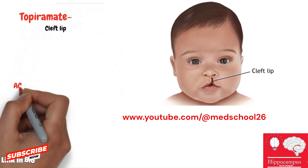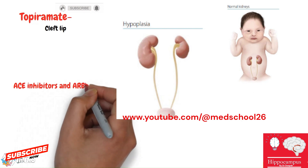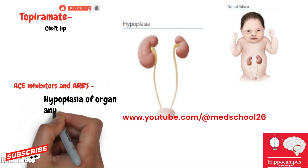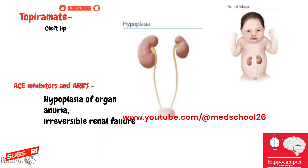Twelfth: ACE inhibitors and ARBs — cause hypoplasia of organs, anuria, and irreversible renal failure.